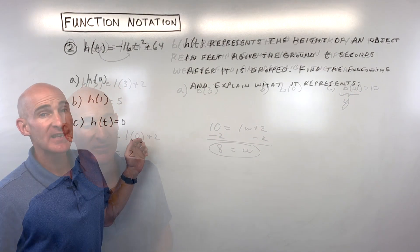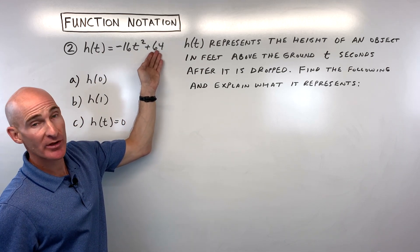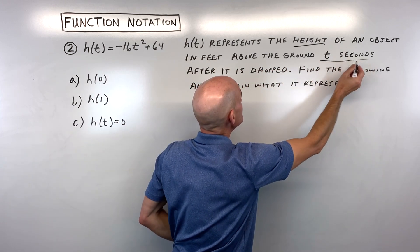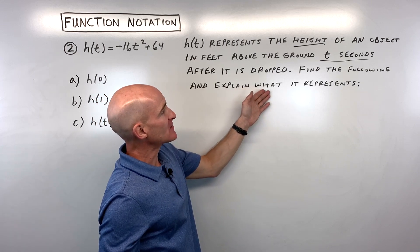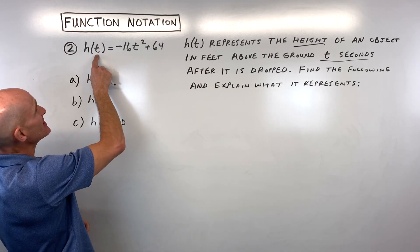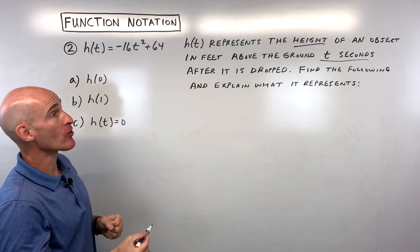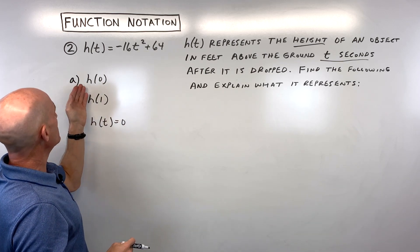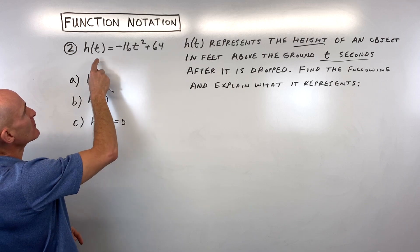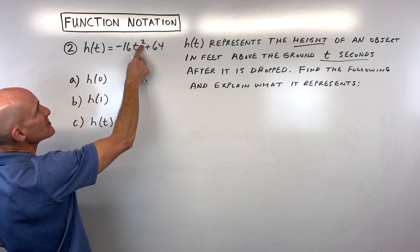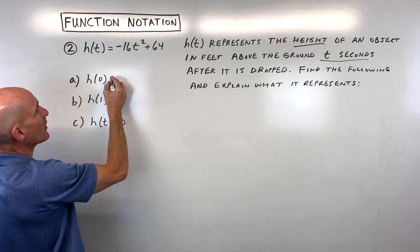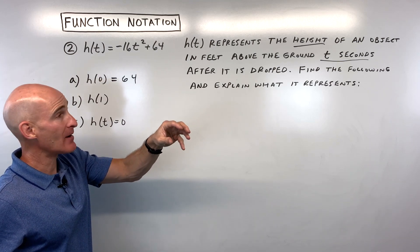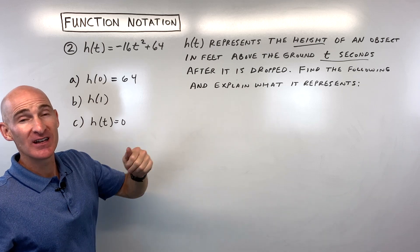For example number 2, we have H of T is equal to negative 16T squared plus 64, where H of T represents the height of an object in feet above the ground T seconds after it is dropped. T is the time — that's what we put in — and what comes out is the height. H of 0 means we put 0 in place of T: 0 squared is 0, times negative 16 is 0, plus 64 is 64. After zero seconds — right as you let go of the object — it's 64 feet above the ground. That's the initial height.